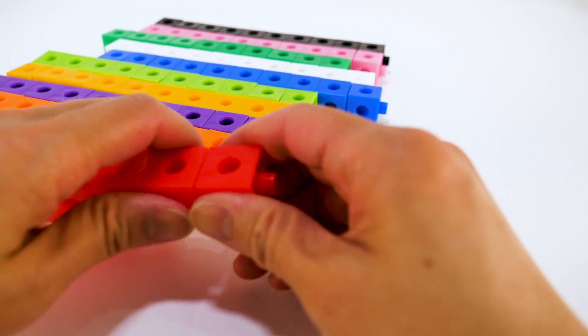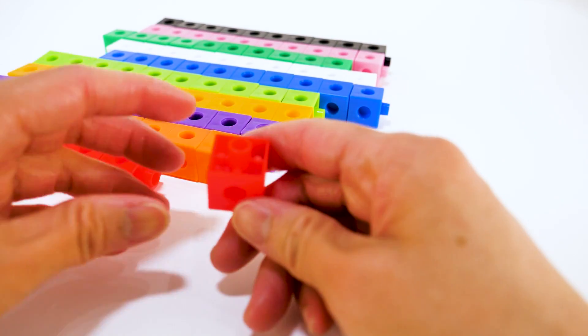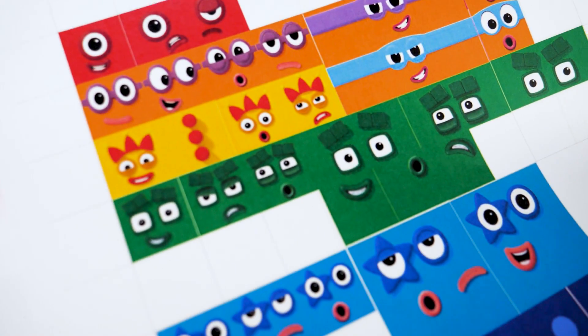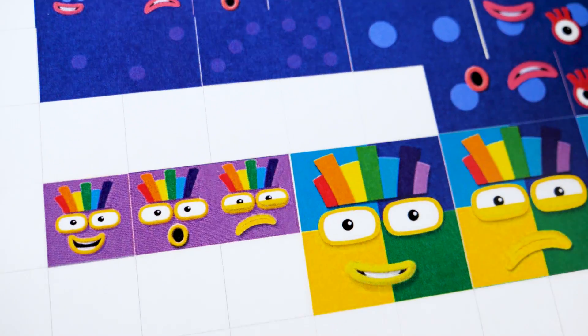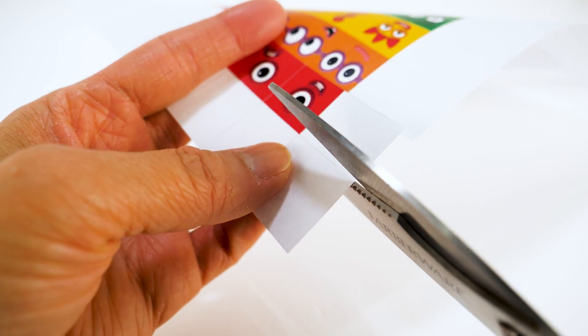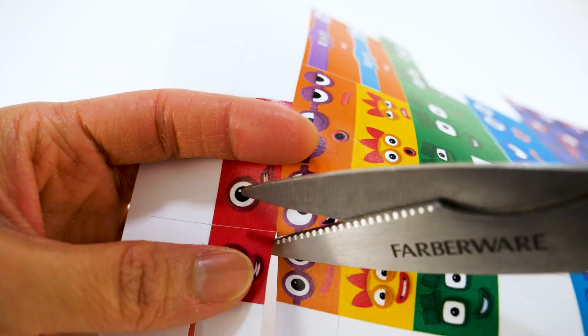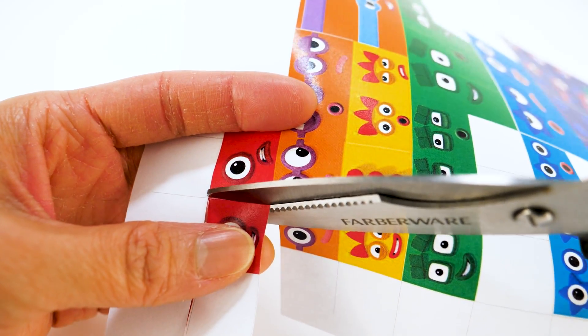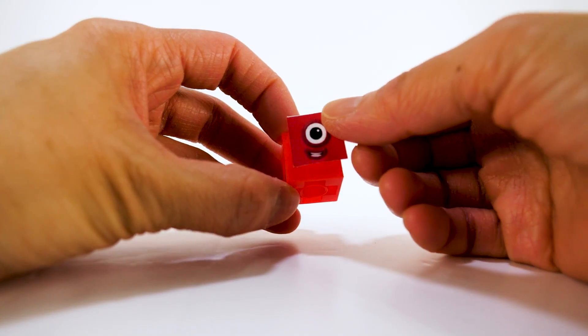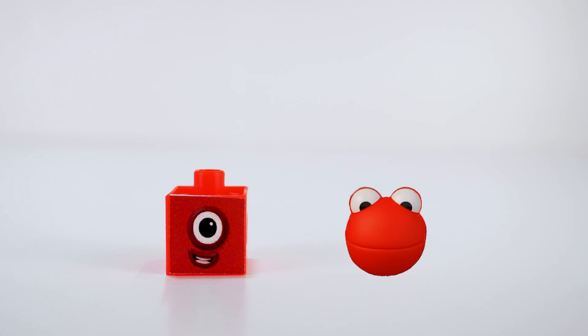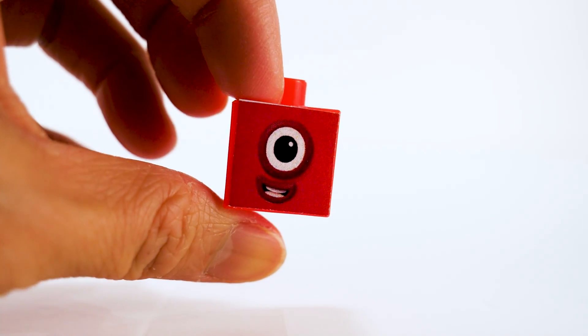First, we have number block 1. She is made up of one red block. You can make sticker for her face or print it on a wire sheet and use tape. Let's cut out number block 1. She has one big circle eye. 1. Number block 1.